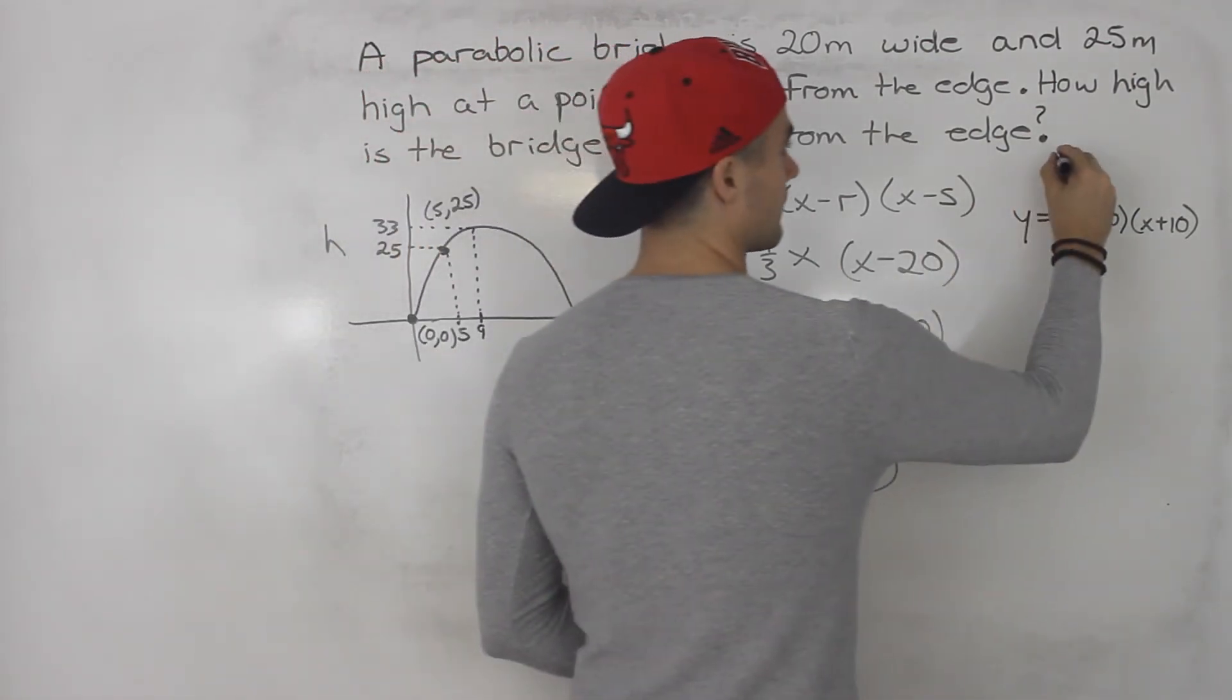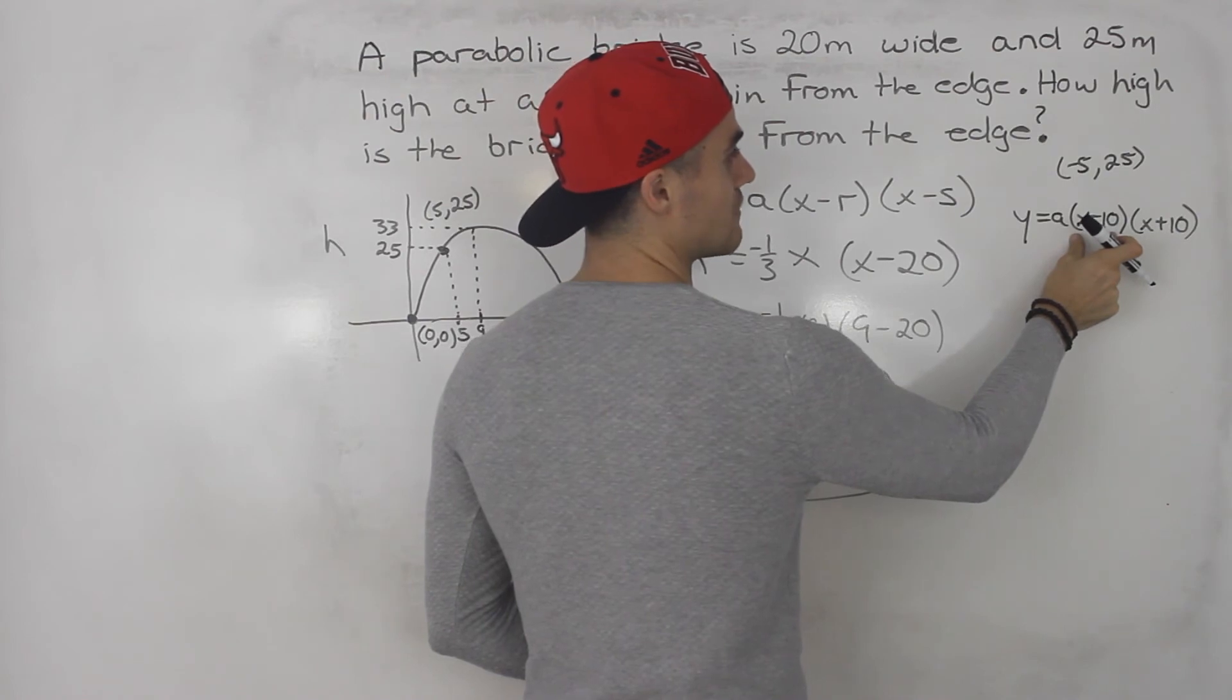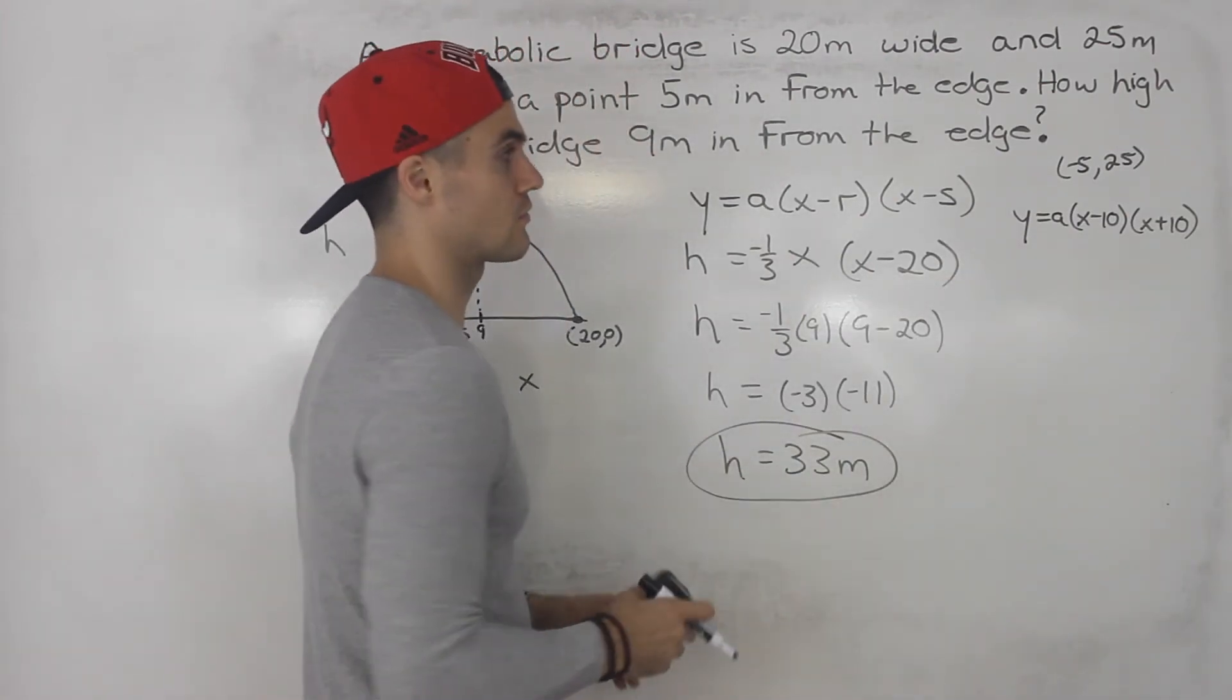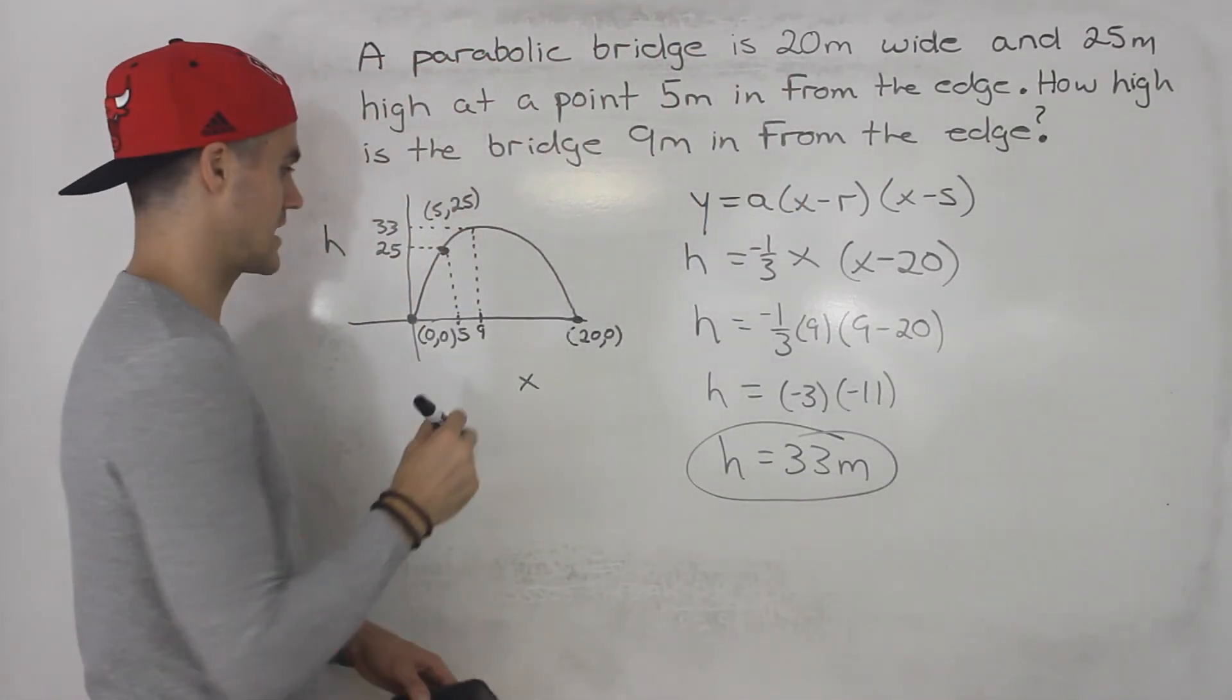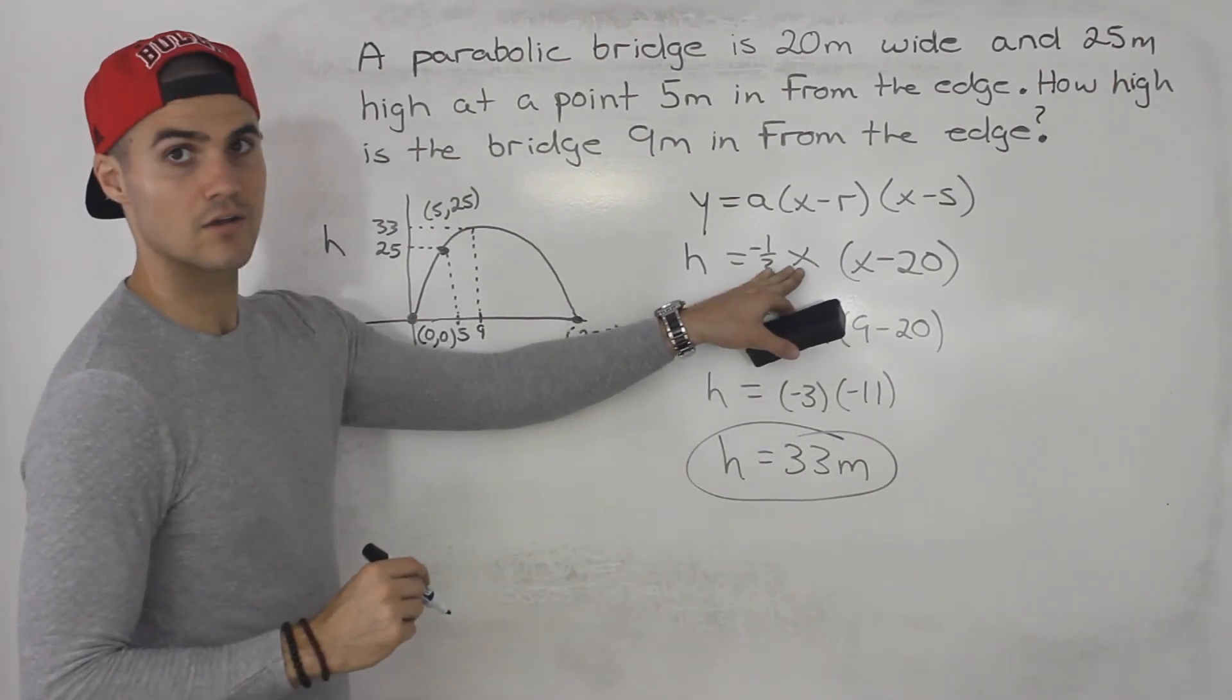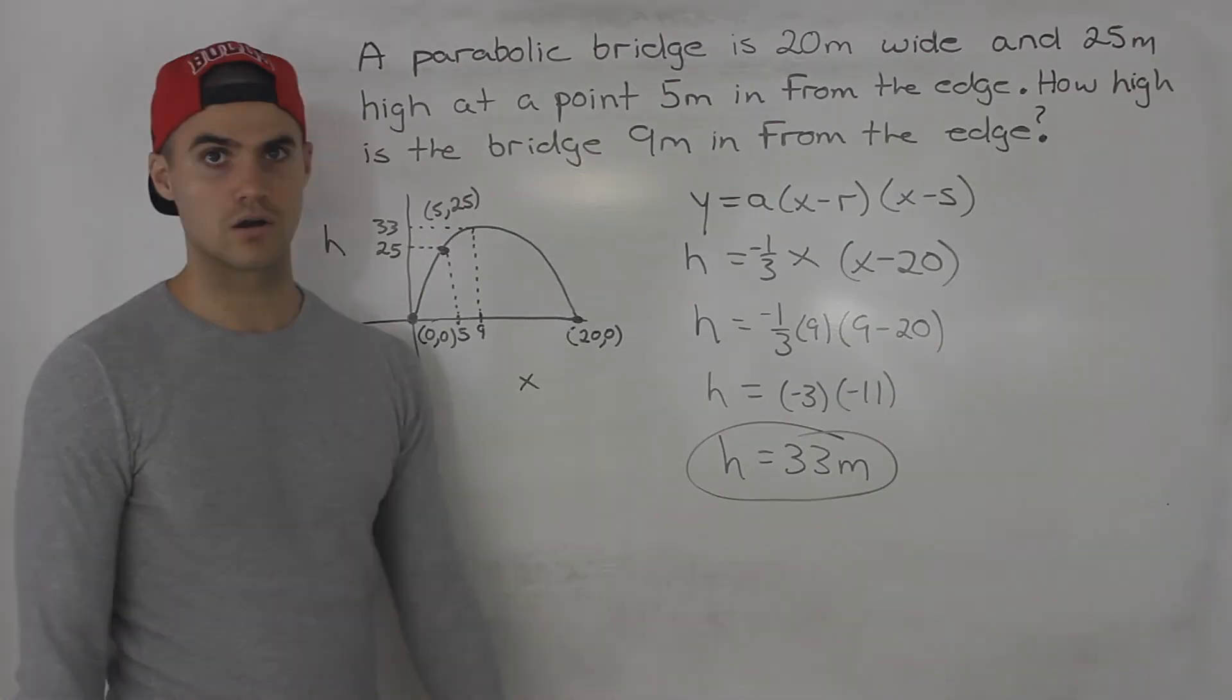And then you would plug in negative 5 and 25. So 25 for y and then negative 5 for x. And solve for that a value and then plug in negative 1. You should get 33 meters. Right? So multiple ways to do this. Again, when I get a question like this, I like to put the edge of tunnels or bridges on the origin if possible. So then I'm just dealing with a single x there because it's x minus 0. Right? So find an equation and then plug in that x value of 9 to get the height that you are looking for.